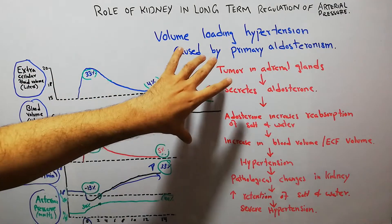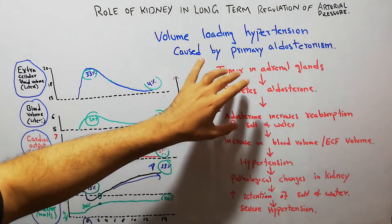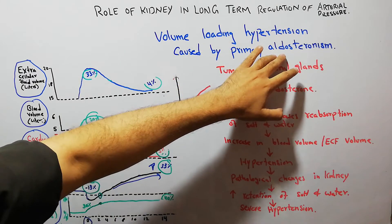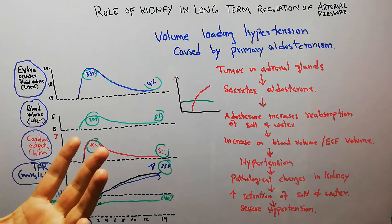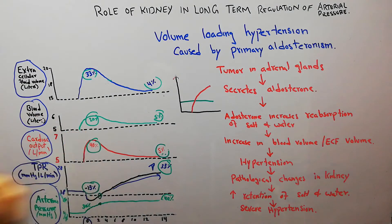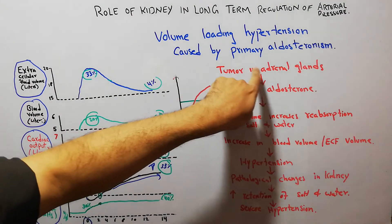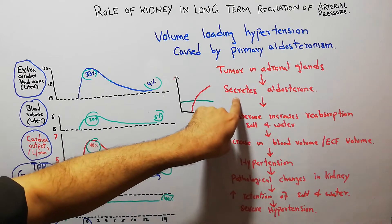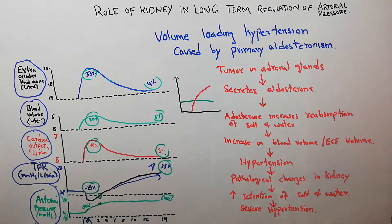The level of aldosterone in the human body can increase through different mechanisms, but if there is a tumor in the adrenal gland that secretes a lot of aldosterone, it is known as primary aldosteronism.